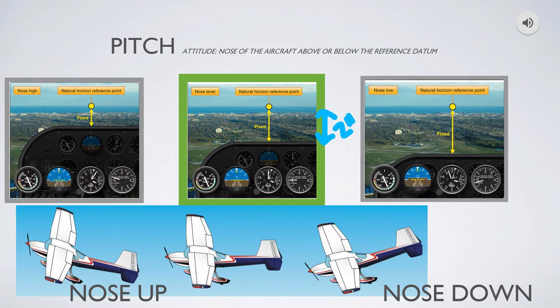You're also going to notice something else. Without a change in power, if you go into a nose up attitude from cruise, you'll see an increase in altitude and your airspeed will start to decrease. And if you're in a nose down attitude relative to cruise, your airspeed is going to increase and your altitude is going to start to decrease.